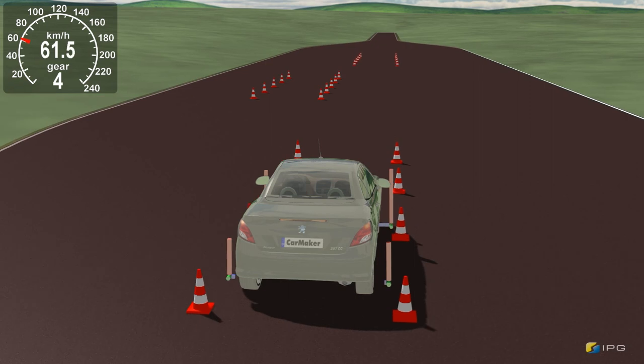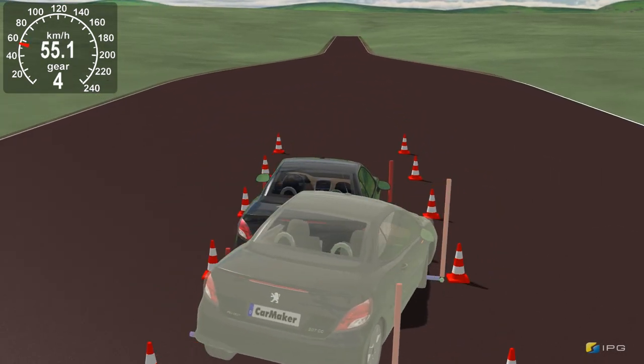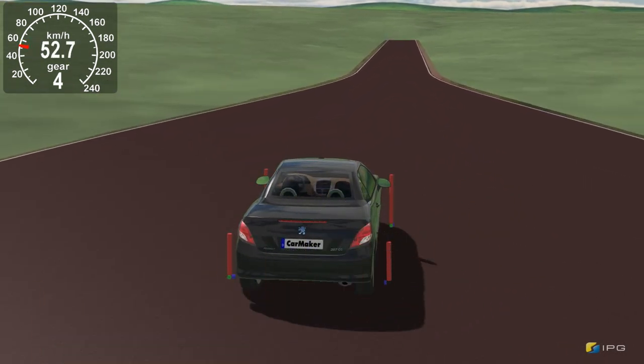When driving back into its own lane, the vehicle with winter tires can no longer stay in the driving area. Due to the dynamic excitation from the first lane change, it quickly gets into an unstable state and leaves the track.